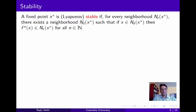A fixed point x-star is stable, or Lyapunov stable, if for every epsilon neighborhood of this point, there exists a delta neighborhood of the point, such that if you begin within the delta neighborhood of the point, then you remain within the epsilon neighborhood of that point for all subsequent periods. Intuitively, the point is stable if you remain close to that point, provided that you start sufficiently close to that point.